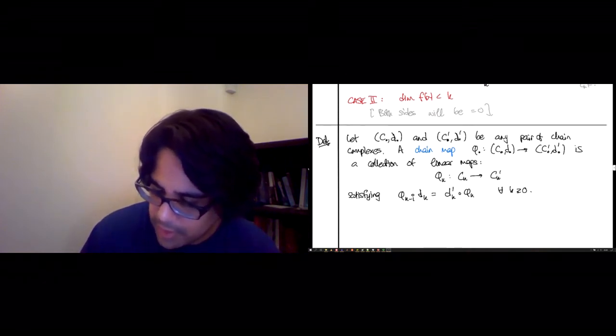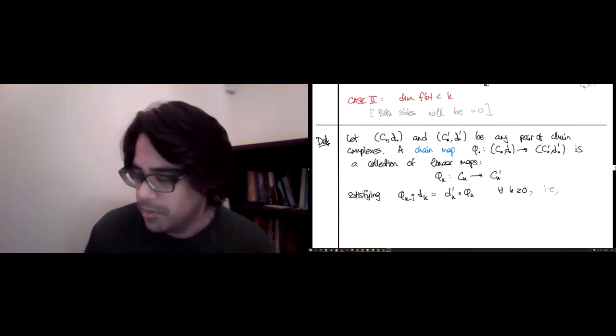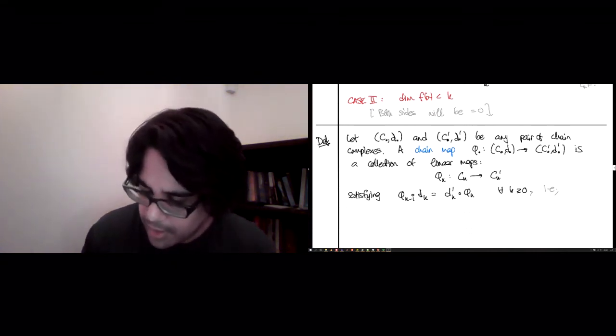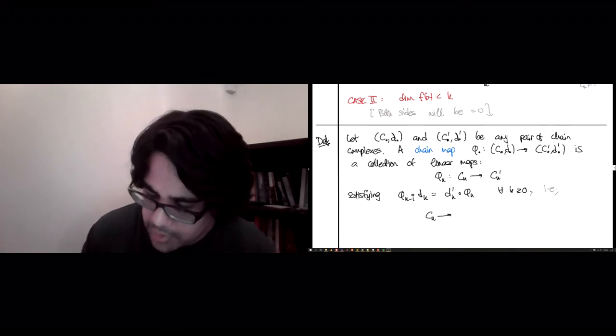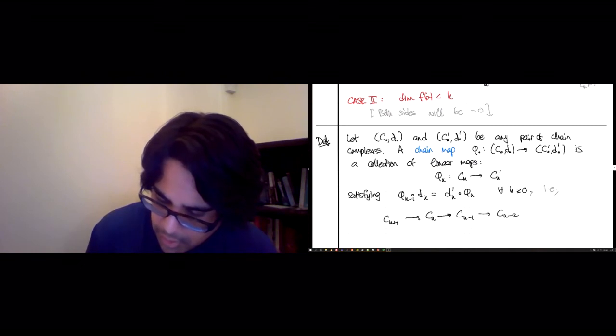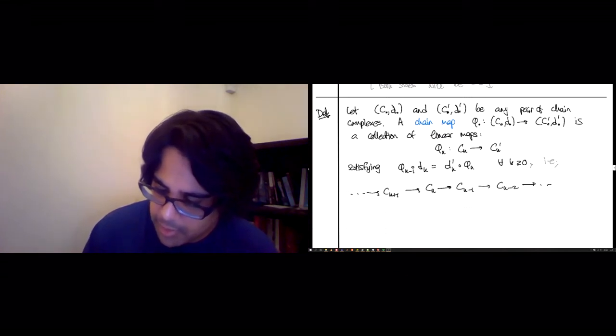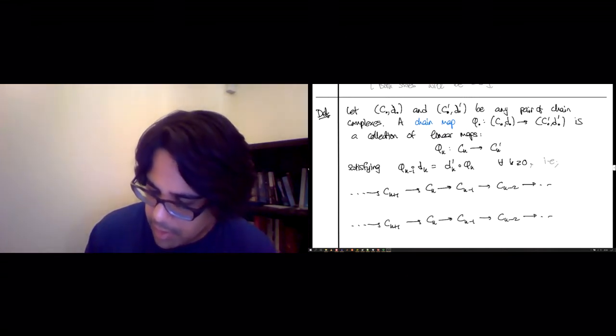So we're going to be satisfying the same relation that we have above, which is to say φ_{k-1} composed with d_k equals d'_k composed with φ_k for every k greater than or equal to 0. And an equivalent way of saying this, which I find much easier to remember, your mileage may vary,